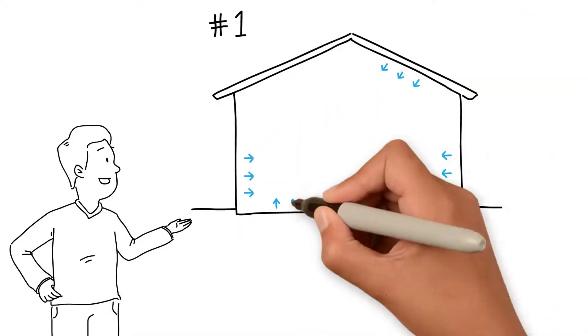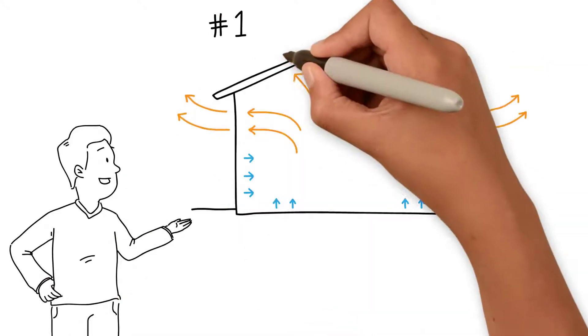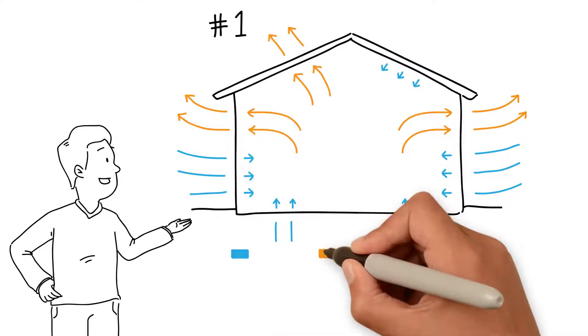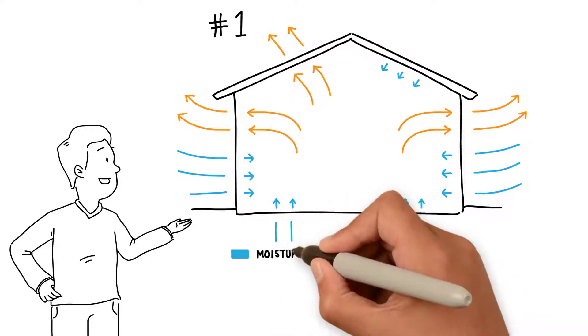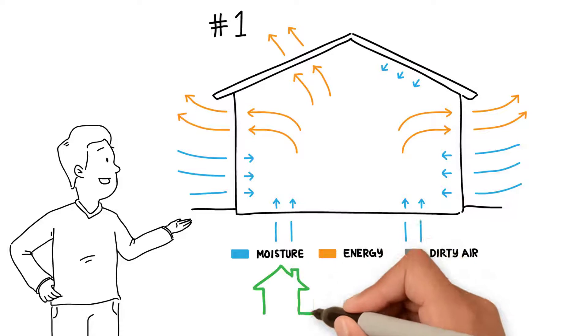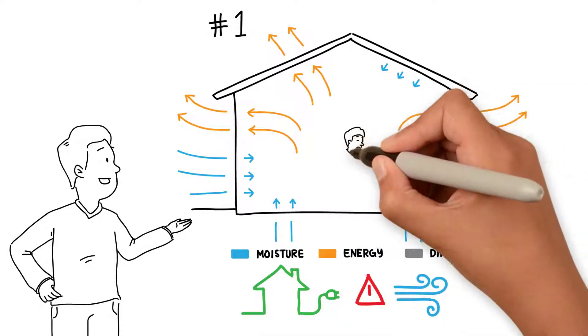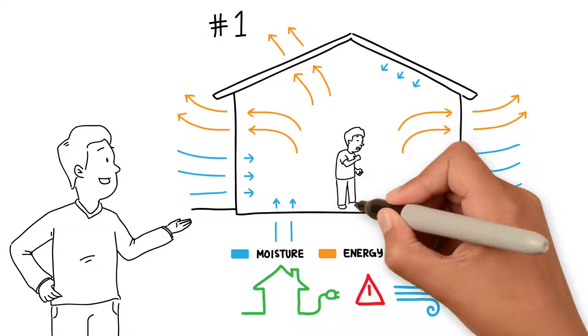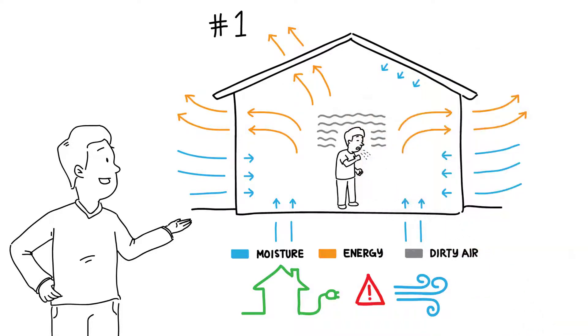Number one is air leakage into the home through walls, roofs, and floors, which can have damaging effects on your home. Uncontrolled air flow through these areas not only carries moisture, but it can also account for a huge portion of a home's energy use and can cause indoor air quality problems.